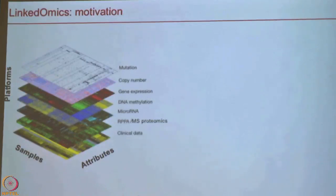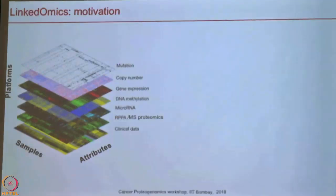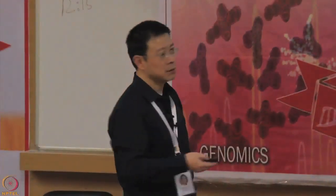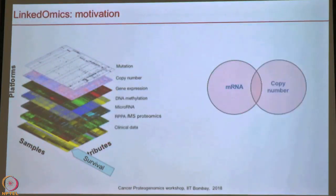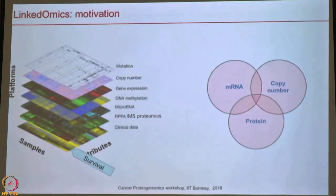With such a huge amount of data you can do a lot, but we are asking what are the most typical questions biologists will want to ask. One question many people are interested in is survival. If you have survival data, you might ask which mRNAs are associated with survival, or do any copy number changes associate with survival, or which protein changes are associated with survival.